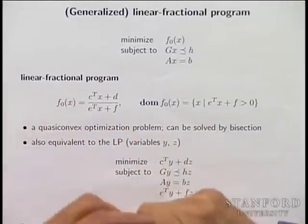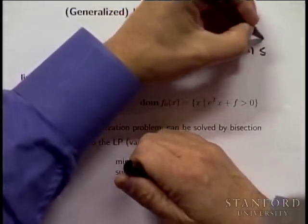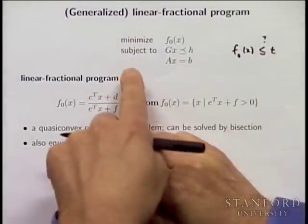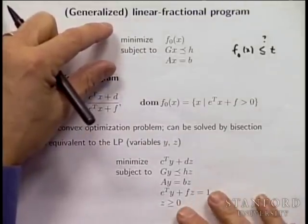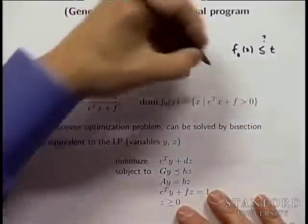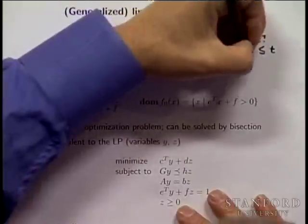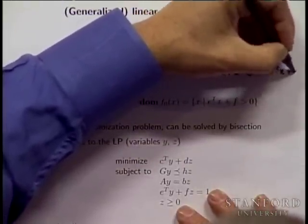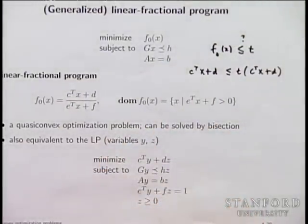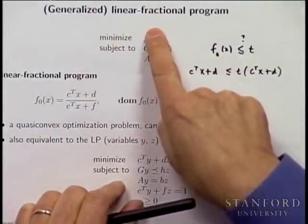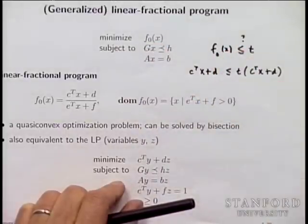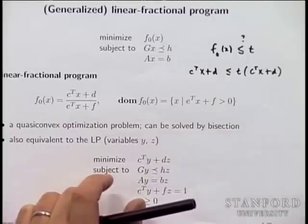To solve by bisection: you want to know if f0 of x is less than t. You take the denominator, which is positive, and multiply it out, and that turns out to be equivalent to a linear inequality. So to check if there's an x satisfying all constraints with f0 of x less than t, you solve an LP feasibility problem. Then you bisect on t and solve this.